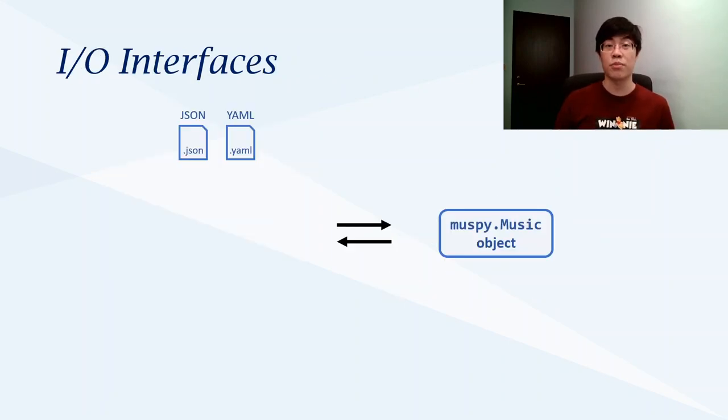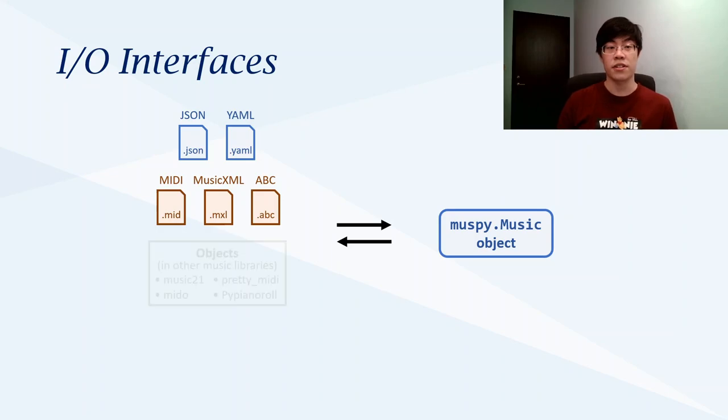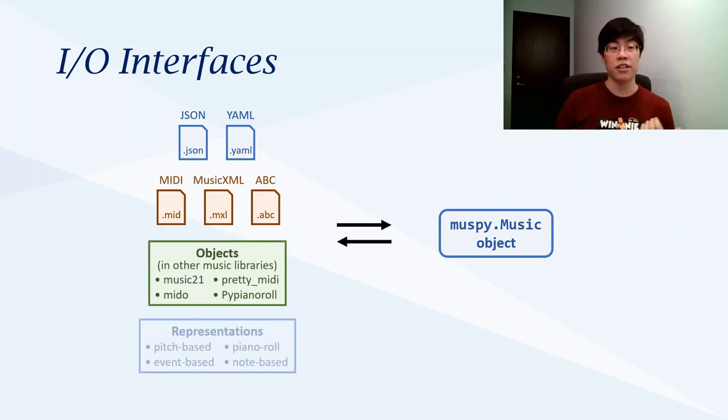In MusePy, we provide several input and output interfaces. First, the native JSON and YAML formats we saw in the previous slide. Second, common symbolic music formats. Third, objects in other symbolic music libraries. And finally, common representations used in previous work.